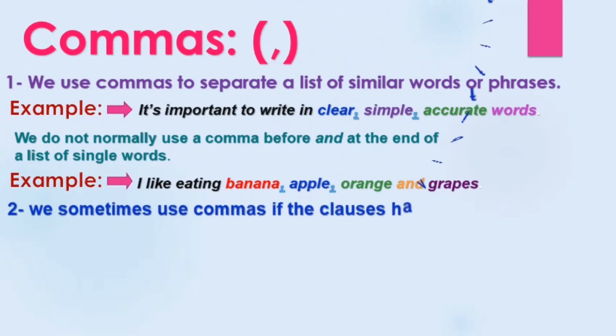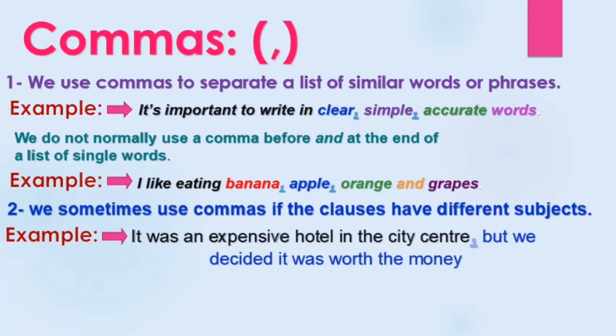Number two: we sometimes use a comma when clauses have different subjects — نستخدم الفاصلة إذا كانت الجمل لديها مواضيع مختلفة. For example: 'It was an expensive hotel in the city center, but we decided it was worth the money.' Here we have two clauses with different subjects: the hotel being expensive, and us deciding it was worth it.